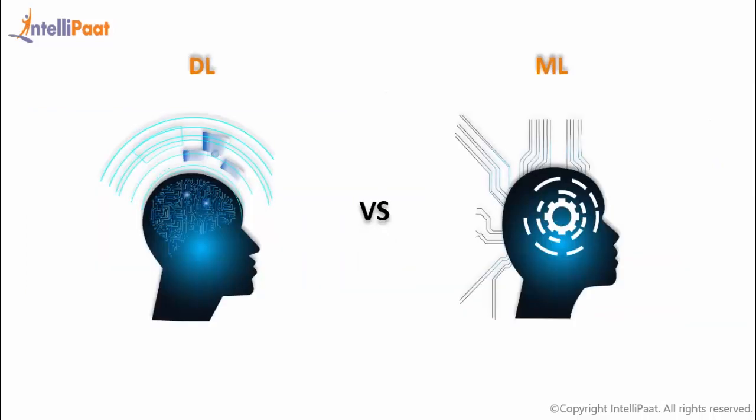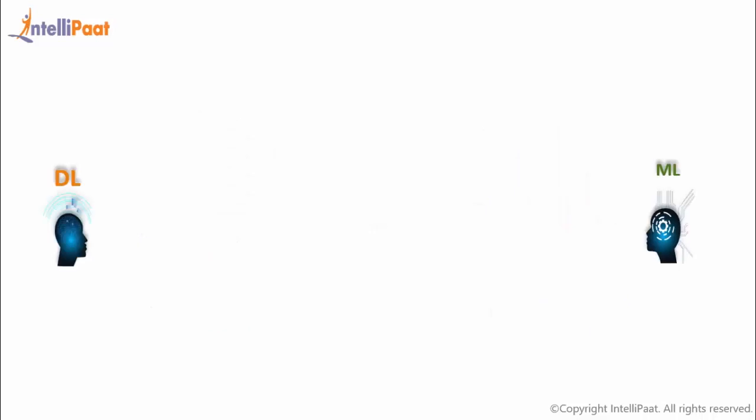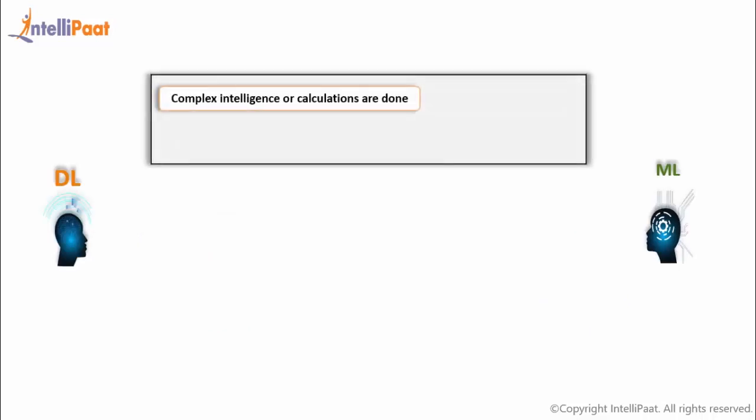By now you must have understood that both technologies are used to perform artificial intelligence. Let's see some key features between these technologies. Deep learning is used to perform really complex and intrigued calculations, just like in the case of AlphaGo, which is four times as complex as chess. Machine learning is used to perform simpler artificial intelligence.